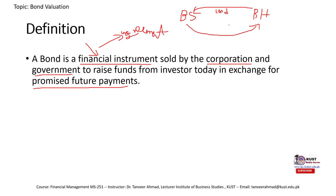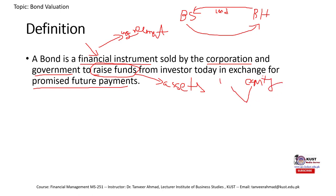Why are government or corporations selling bonds? Because they need to raise funds to buy assets — say inventory. A government needs to develop projects, or a corporation might want to install a new factory. Remember, to buy assets we get funds either from the owner's equity or from the liability side. This bond represents the liability side — when a company sells a bond it is generating a liability.